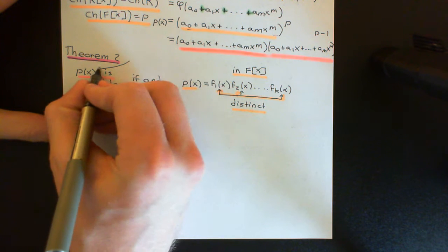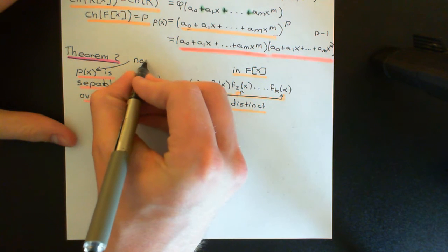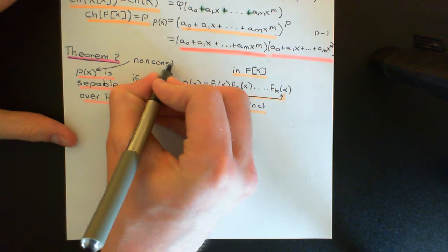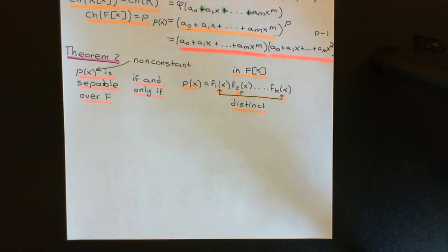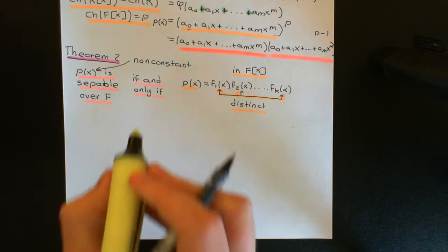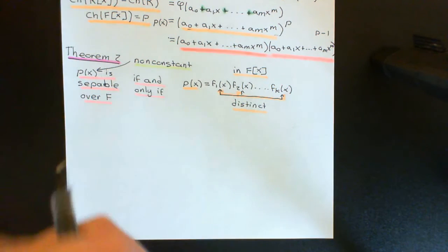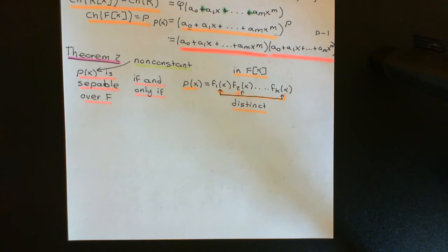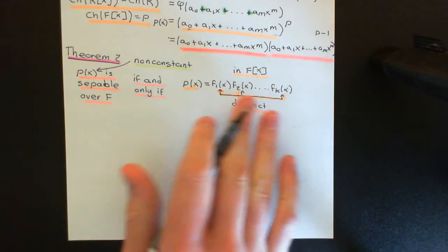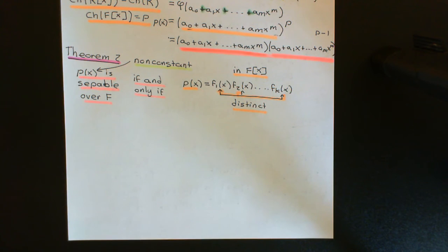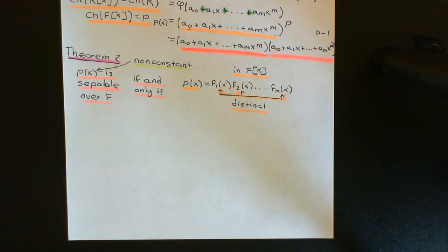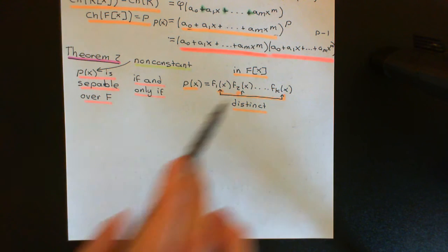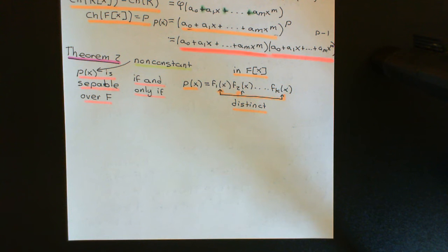P(X) is a non-constant polynomial because the adjective 'separable' is only applicable to non-constant polynomials — not the zero polynomial and not non-zero constant polynomials, since those are units in the ring of polynomials over a field. It's only for degree-one-or-greater polynomials, and those will have a factorisation into irreducibles.